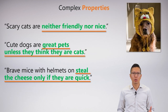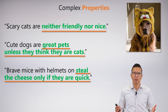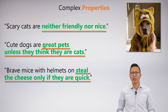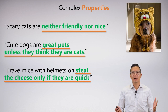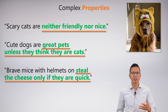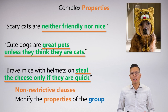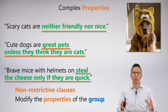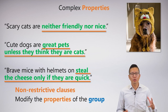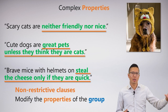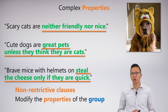For complex properties, it's the same story. You can say anything you want about a subject — it's not always something simple like 'is scary' or 'is evil.' You can say they're neither friendly nor nice, or they make great pets unless they think they are cats, or they steal the cheese only if they are quick. Anything that modifies the property for a universal comes in the consequent, and for an existential it goes after the main connective of the conjunction within the parentheses.